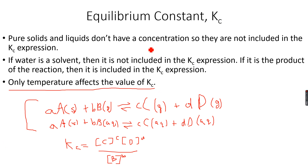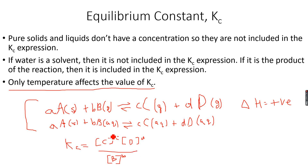If the forward reaction is endothermic, meaning the enthalpy change is positive, then increasing temperature will shift the equilibrium to the right, because an increase in temperature favours the endothermic side of the reaction. More of C and D will be formed, making the numerator of the Kc expression larger, so the value of Kc will increase.